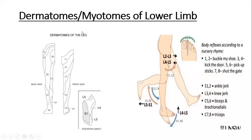In this lecture we shall cover the dermatomes, that is the segmental innervation of the skin of the lower limb, and myotomes, that is the segmental innervation of the muscles of the lower limb. Starting with the dermatomes, this is the anterior view of the lower limb.